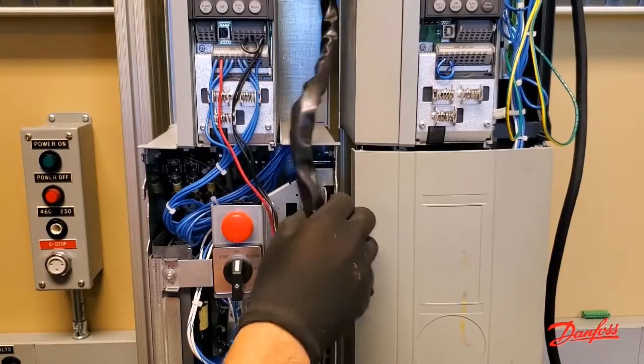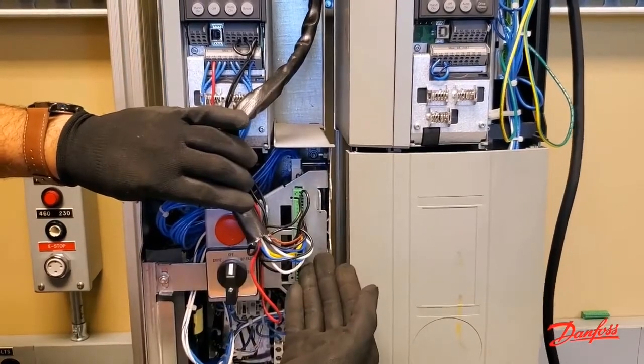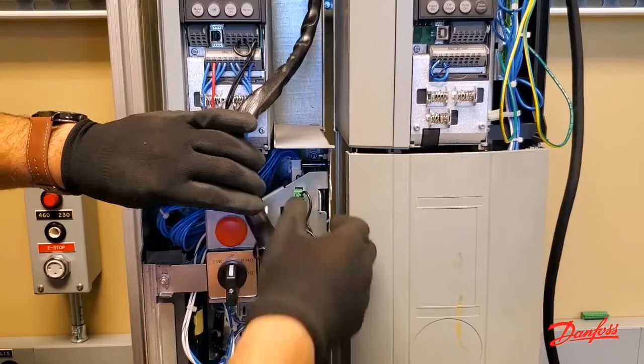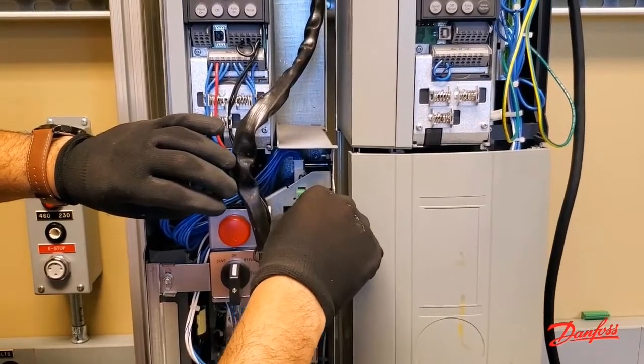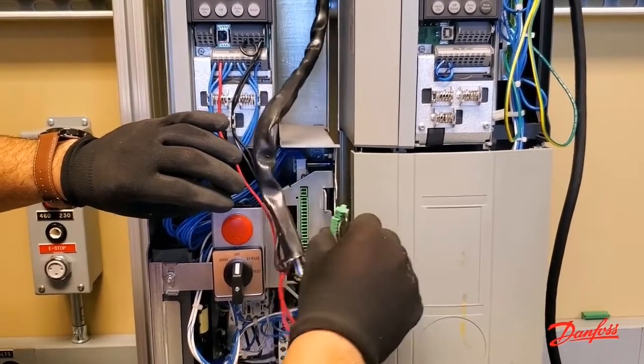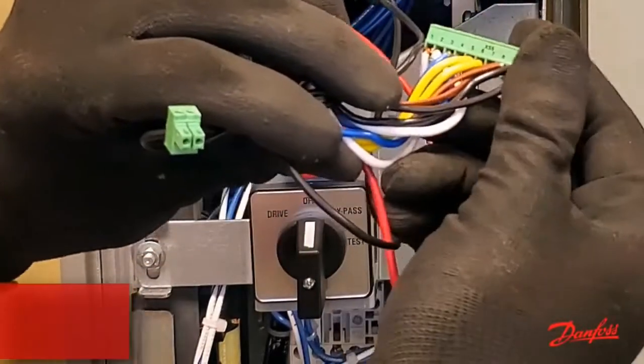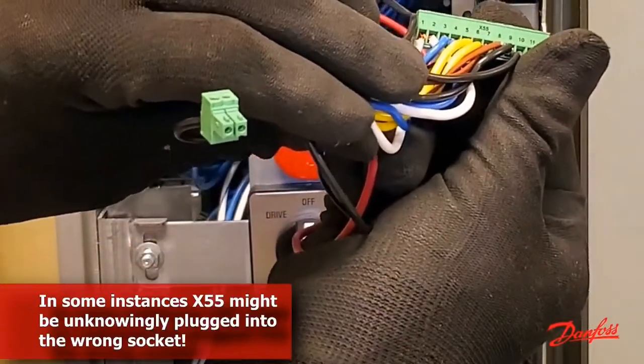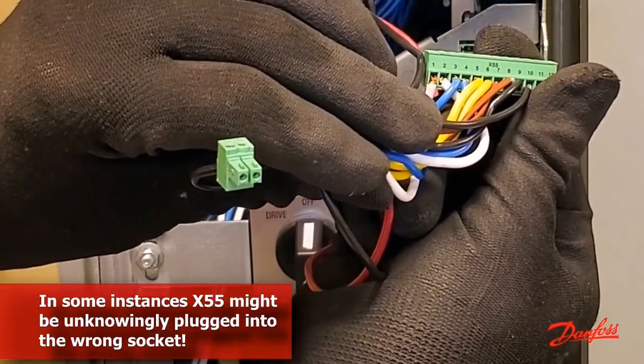The physical location for all three of these connections is a terminal block labeled X55, sometimes MK100, at the bypass board. Notice how the terminal block itself is labeled X55, as should be the socket on the board. Always double check.